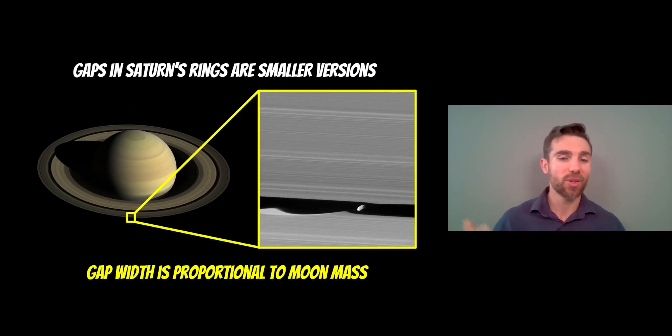A bigger moon causes a bigger gap, smaller moon, smaller gap. Even if we can't see a moon there we could work out its approximate mass. And that is true for planets in these disks as well. We typically can't see the planet because they're so far away. But the gap width is a really good indicator to how big a planet might be.